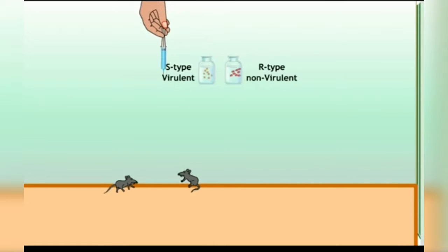The other R-type rough colony non-virulent. Live S-type injected into mice, now the mice dies. Live R-type injected into mice, no infection is going to cause, the mice survives.